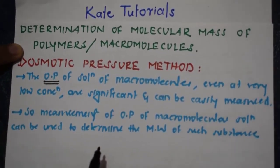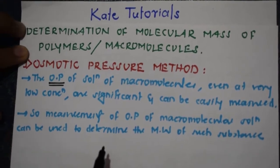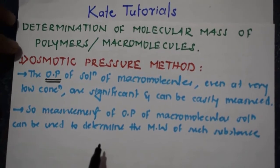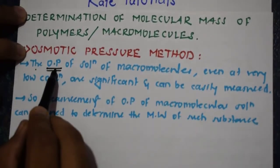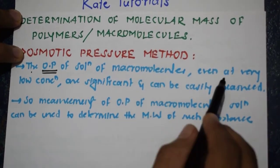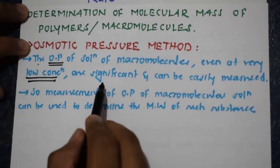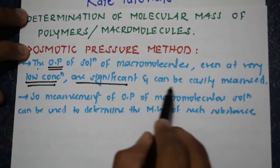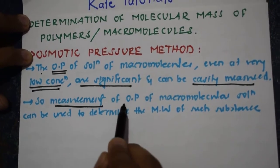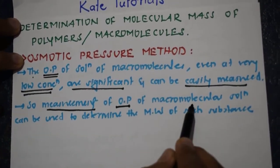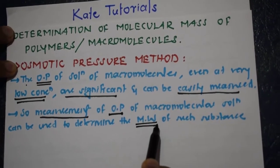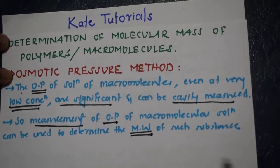In this class, we are going to discuss only about the determination of molecular mass of polymers by the osmotic pressure method. The osmotic pressure of a solution of macromolecules, even at very low concentration, is significant and can be easily measured. So the measurement of osmotic pressure of a macromolecule solution can be used to determine the molecular weight of such substances.